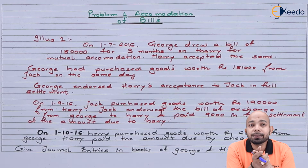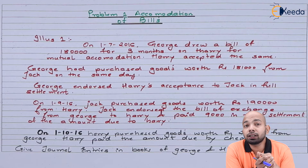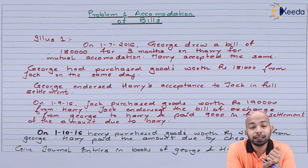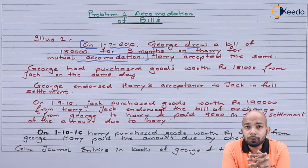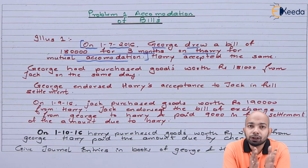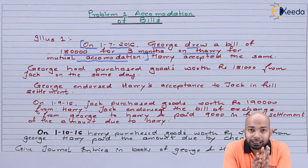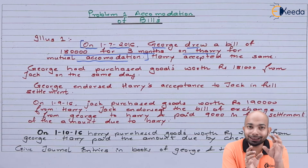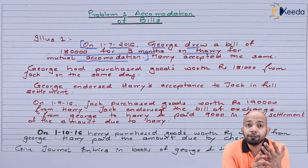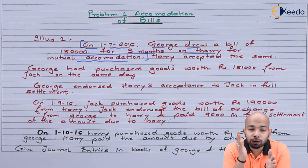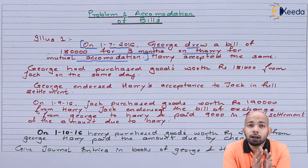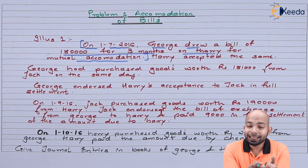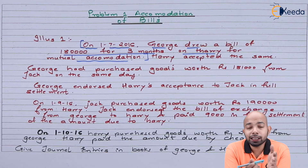Let's read the first line: on 1st of July, George drew a bill of 1 lakh 80,000 on Harry for a three-month period on the basis of agreed mutual accommodation. I'll be mentioning each phase with different marker pens so you can understand the timeline. Harry accepted the bill on the same day.